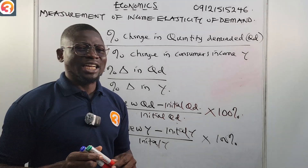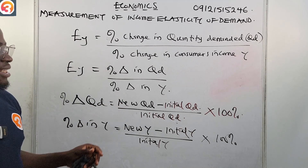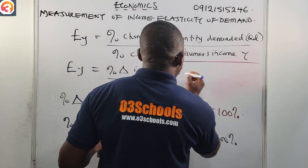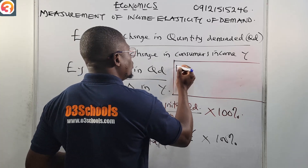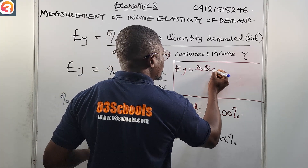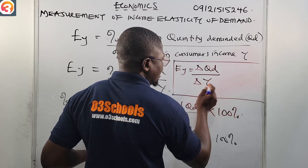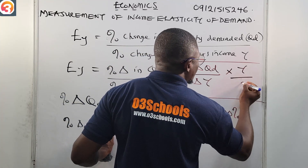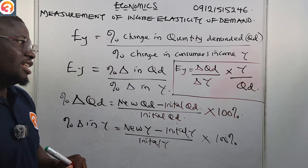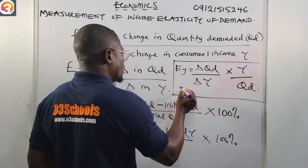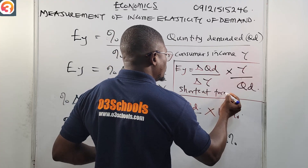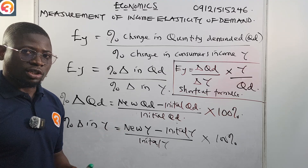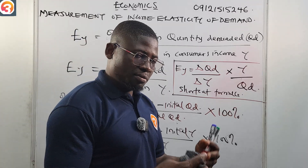There is also a shortcut formula we can use. EY equals change in quantity demanded over change in income, times initial income over initial quantity demanded. This is the shortcut formula for calculating income elasticity of demand. We are going to use both formulas to solve the question so we can confirm both give the correct answer.